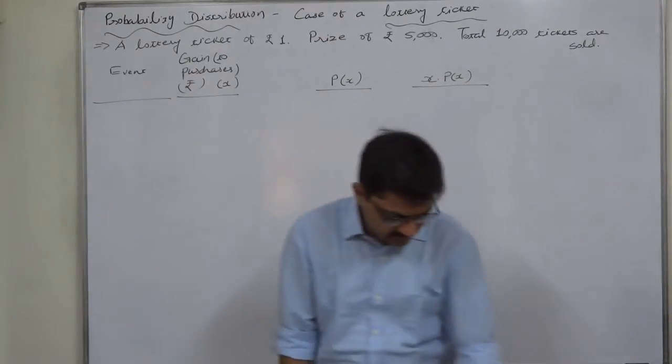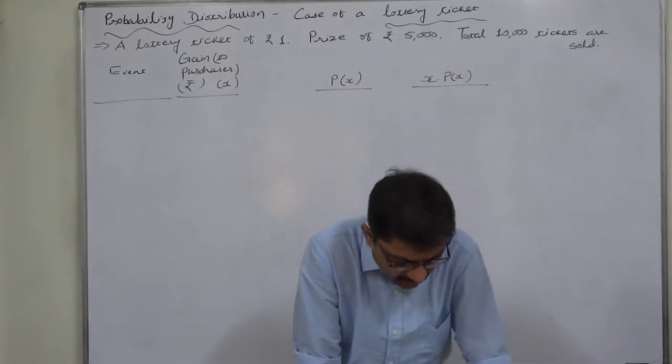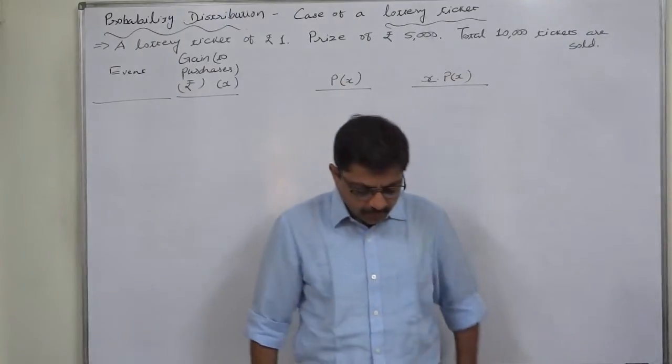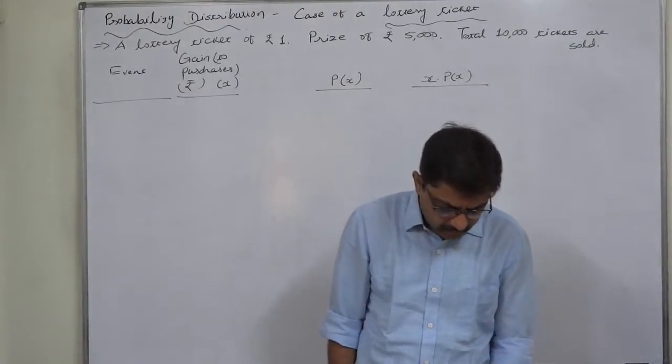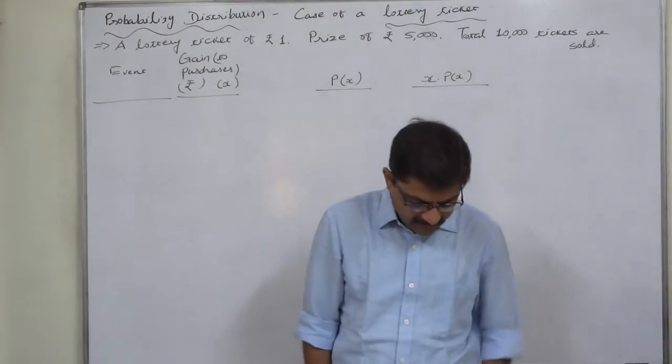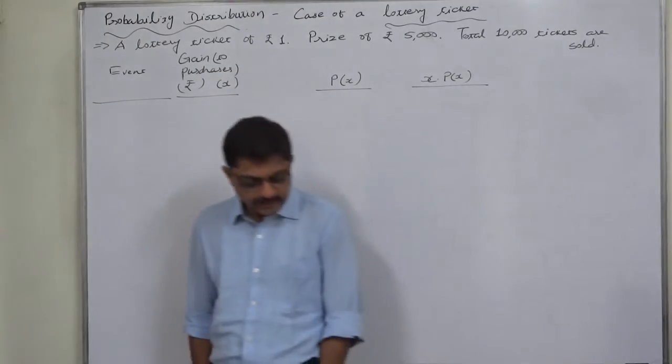The case is: a lottery sells 10,000 tickets at rupee 1 per ticket. A prize of rupees 5,000 will be given to the winner of the first draw. Suppose you have bought a ticket, how much should you expect to win?